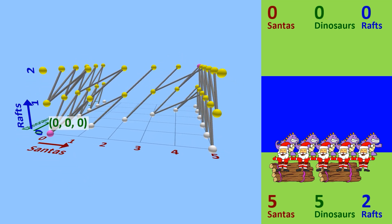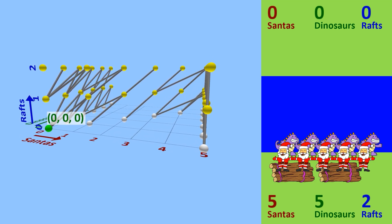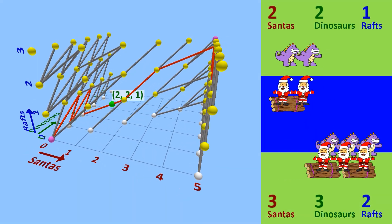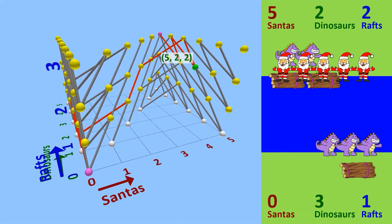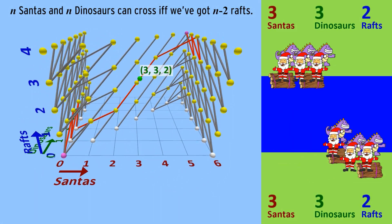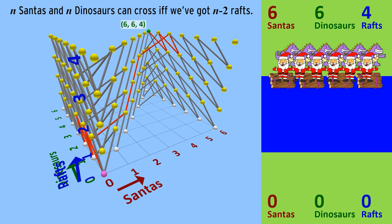This is for a similar reason as before. We can see there's this small gap in the middle that can't be crossed without some sort of illegal teleportation. But with three rafts, five Santas and five dinosaurs can cross. You might be starting to see a pattern here. The pattern is N Santas and N Dinosaurs can cross the river if and only if we've got at least N-2 rafts. Why?